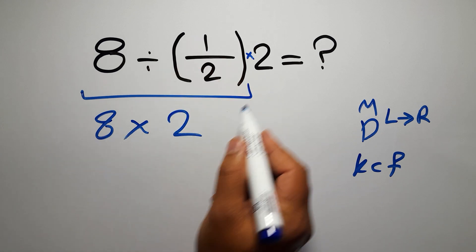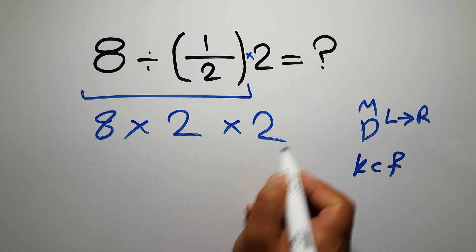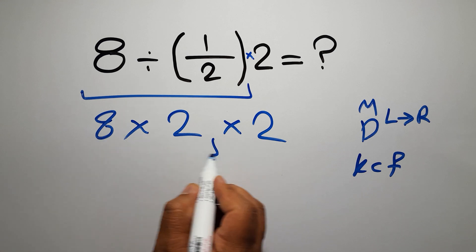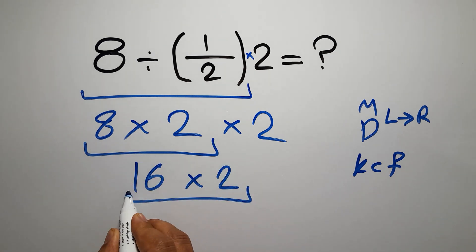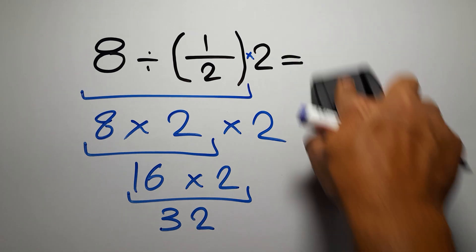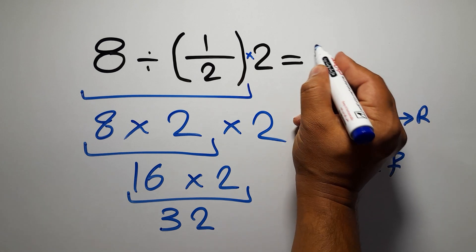So we have 8 times 2, and again times 2. No, 8 times 2 gives us 16, and 16 times 2 is just 32. And this is our final answer to this problem. The correct answer is 32.